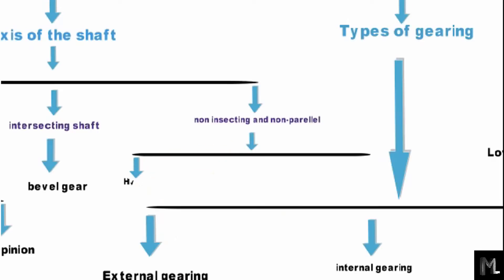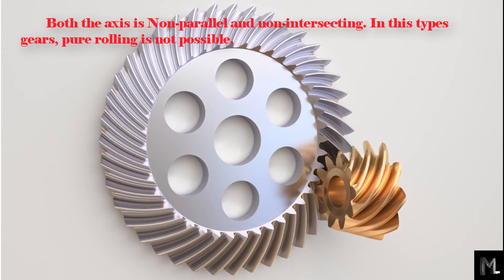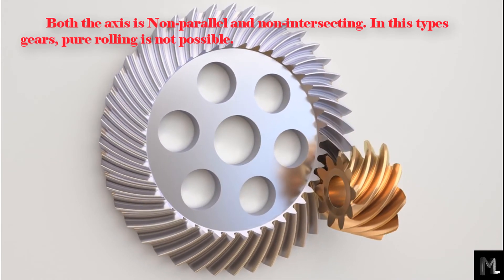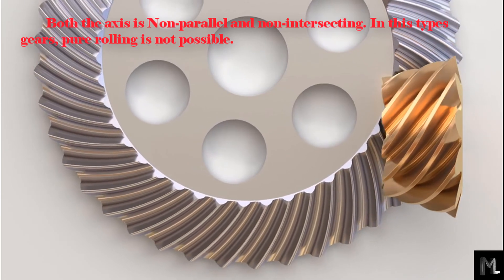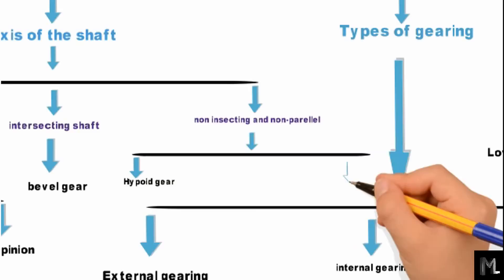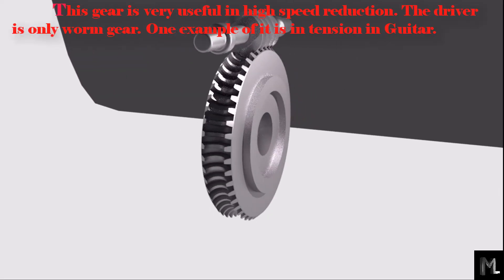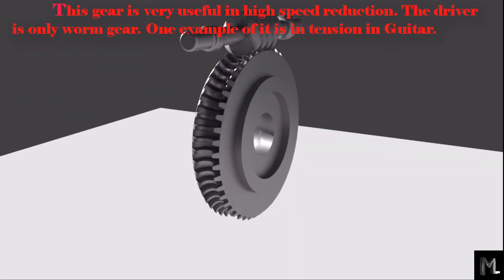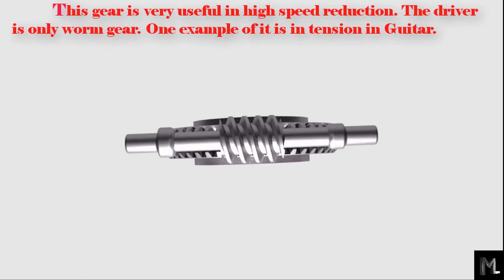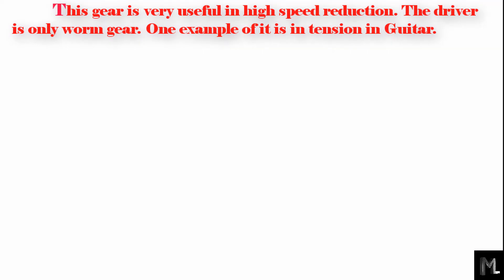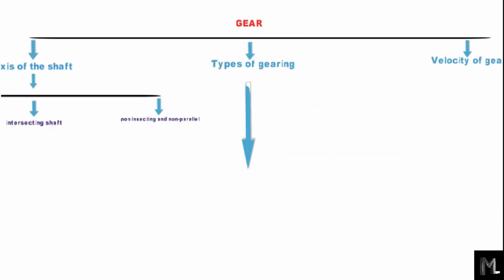The first type of non-parallel and non-intersecting gear is the hypoid gear. In this type of gear, pure rolling is not possible. This type of gear is used where there is a space limitation and is very useful for high speed reduction. The driver is only the worm gear. One example is worm and gear.